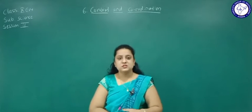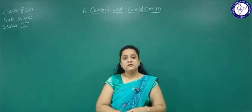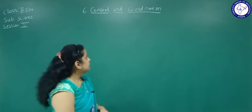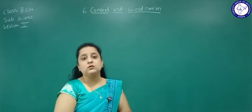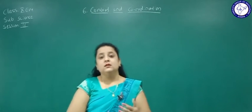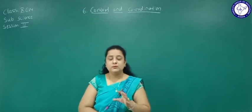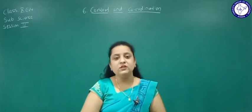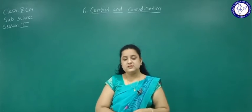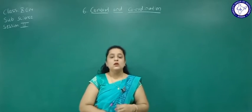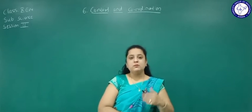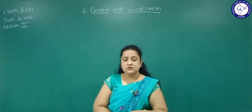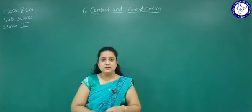Hello students, welcome to this session. In the previous session we started with the chapter called control and coordination. We discussed the structure of the human brain, which is divided into forebrain, midbrain, and hindbrain. We also covered the structure of the nerve cell — the neuron — how messages are transferred from one part of the body to another, reflex action, and reflex arc with examples.